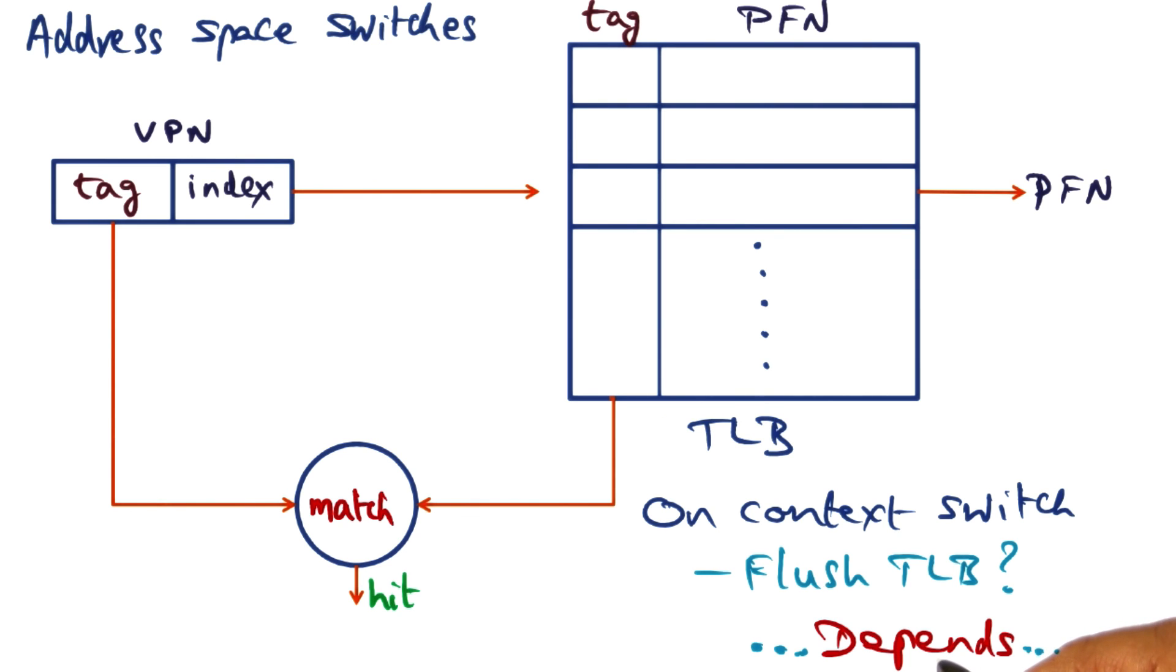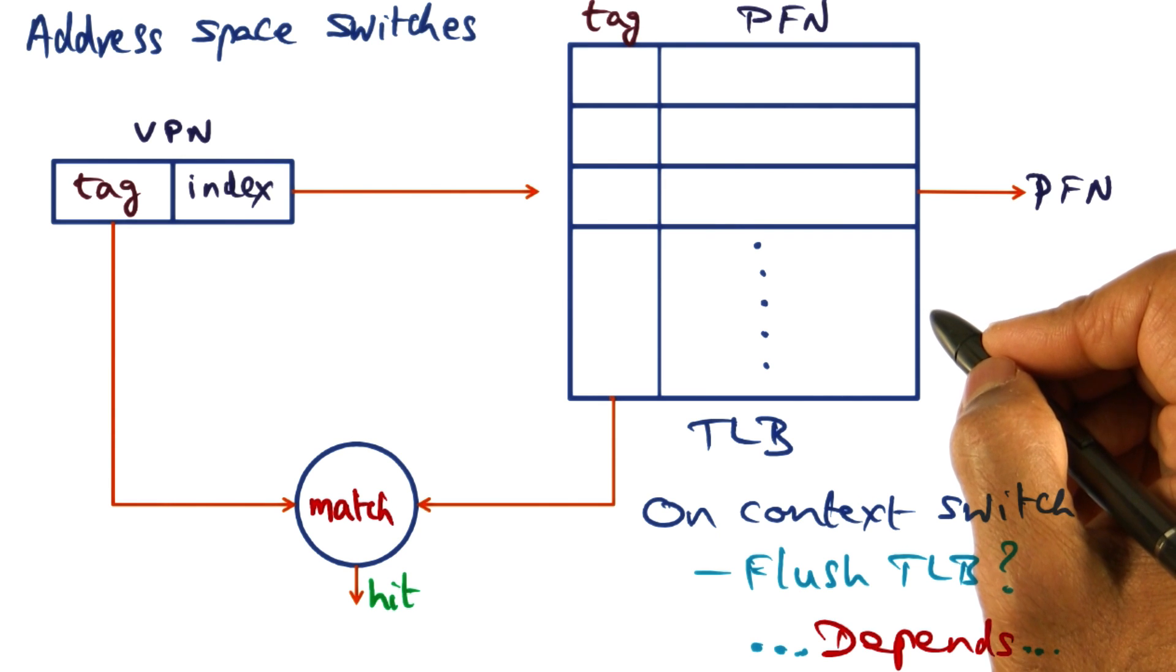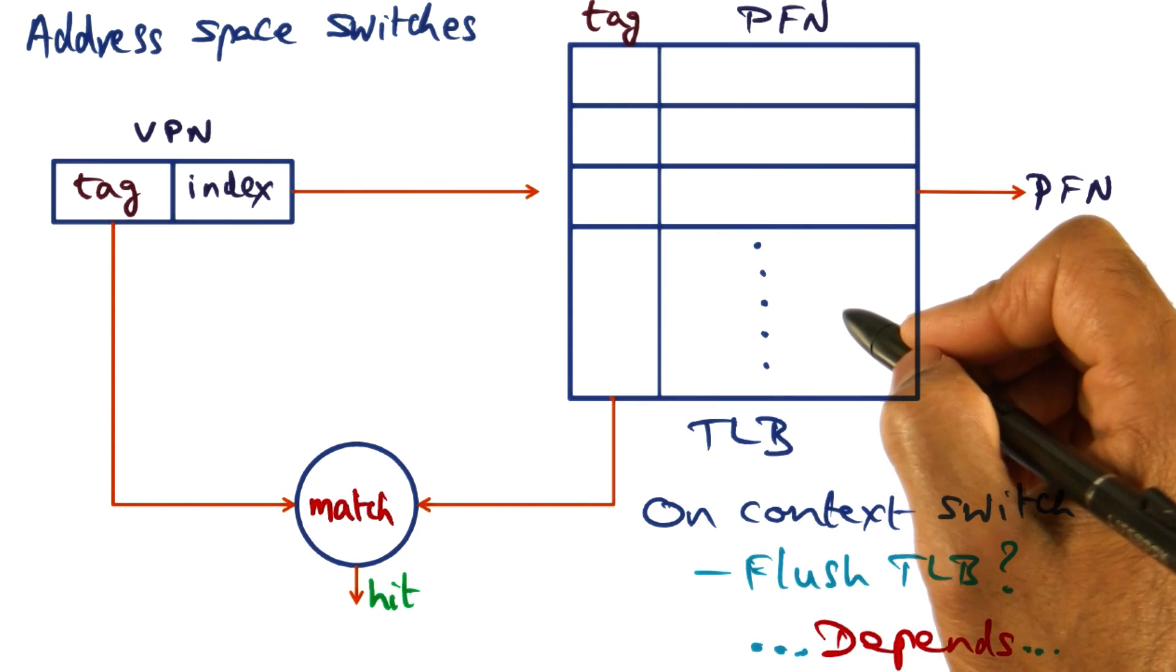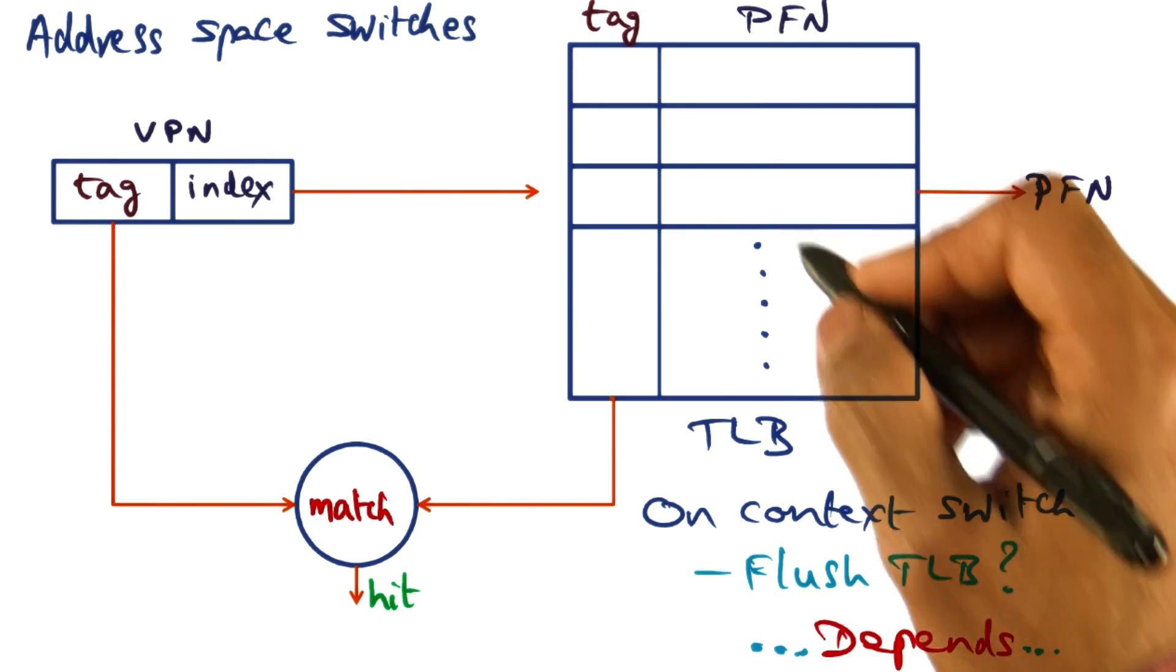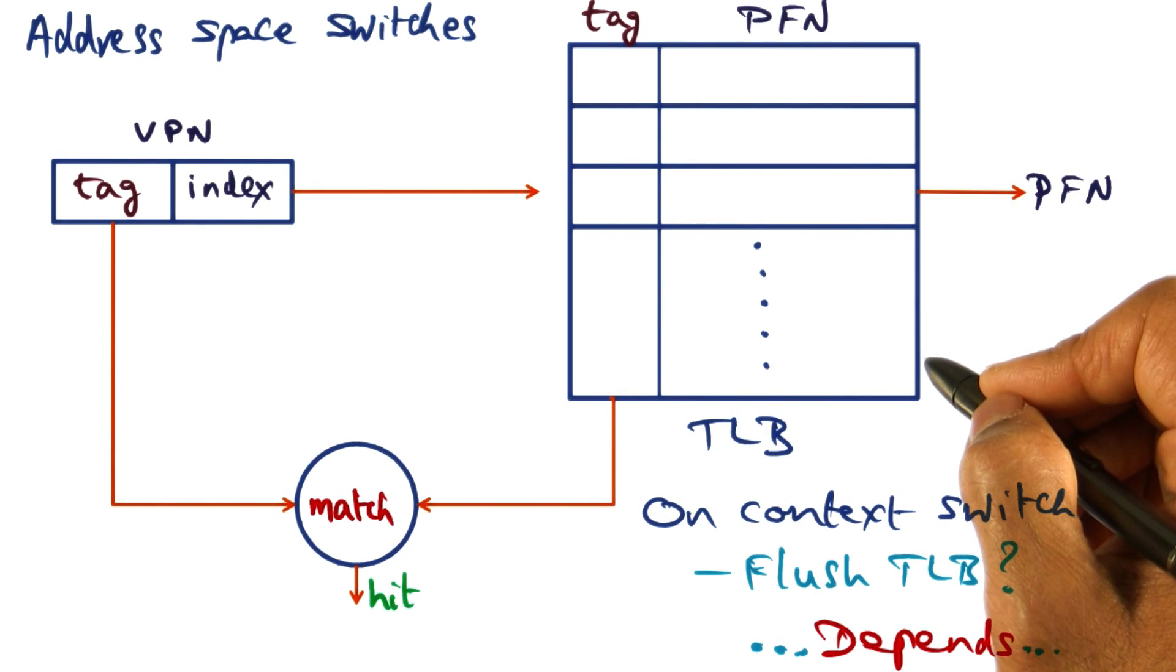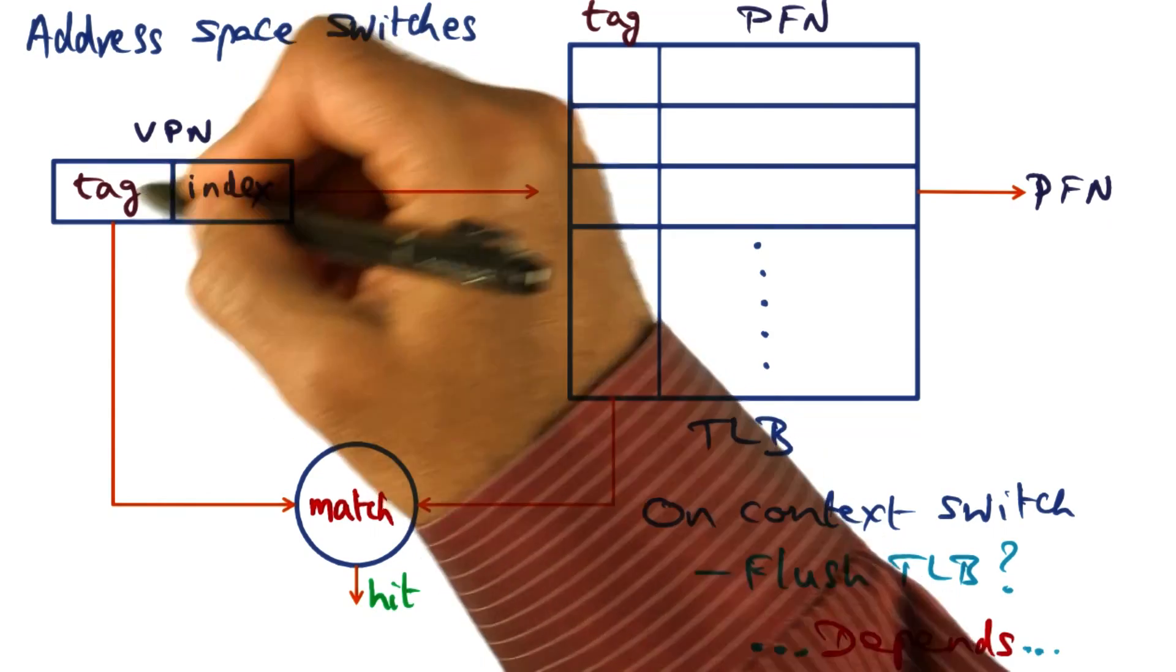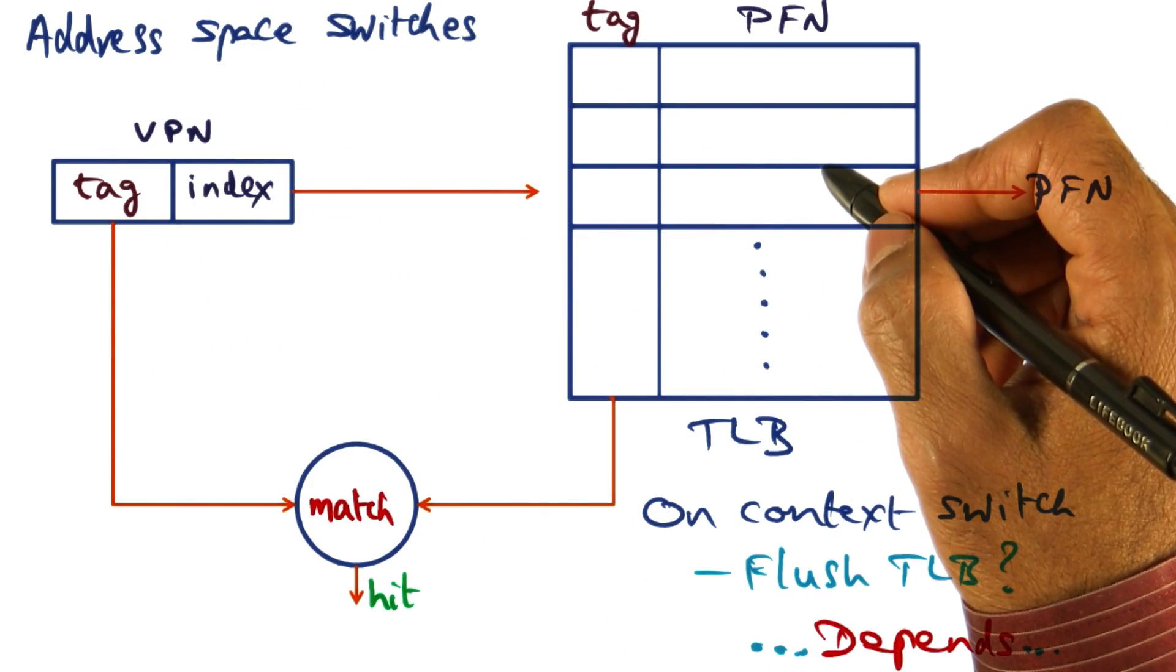It depends on whether the TLB has a way of recognizing that the virtual to physical address translation that is contained in it is flagged by the distinct process for which those translations have been put into the TLB. Or in other words, if the TLB has address space tags in addition to the tag for disambiguating one virtual address from another virtual address,